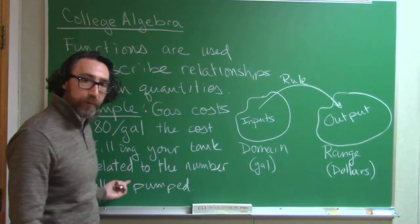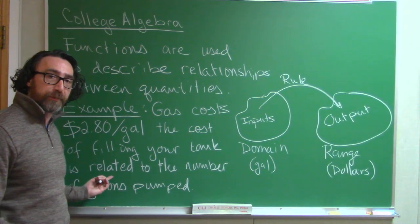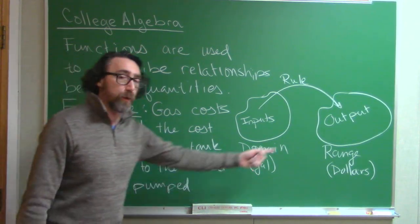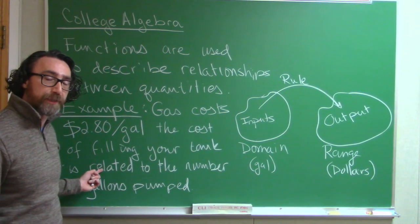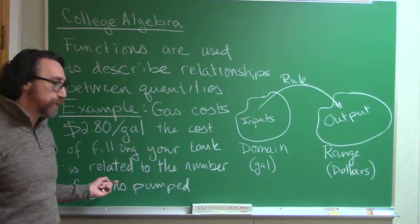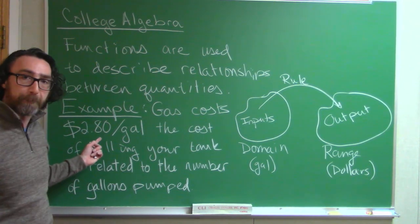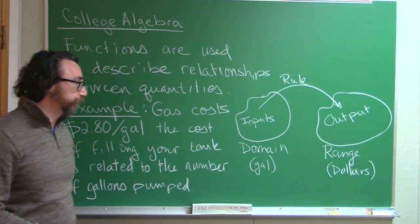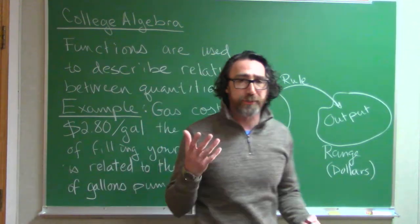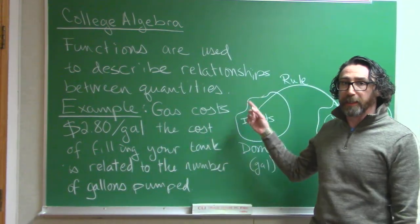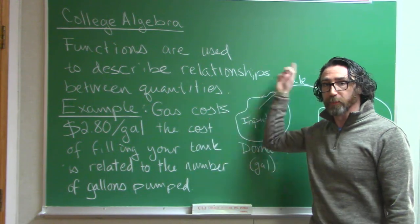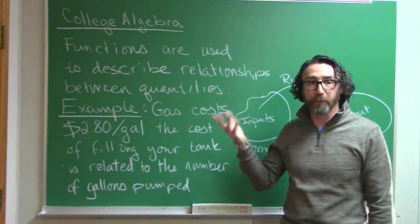And in this case, it's fairly easy to see that if you want to figure out the cost, you would take the number of gallons that you pump into your tank and multiply it by 2.8. So, very easy to understand the concept of a function as a rule for taking your input and figuring out how it's related to your output.